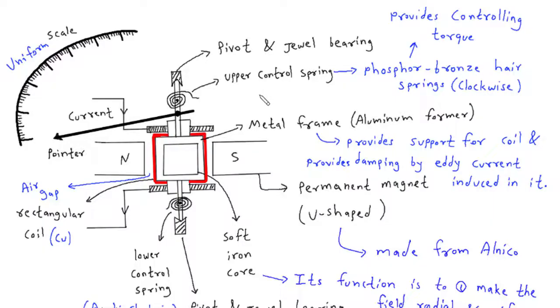From the pivotal pivot and jewel bearings to the magnetic forces generated by the permanent magnet and soft iron core, we'll uncover the secrets behind its smooth operation.